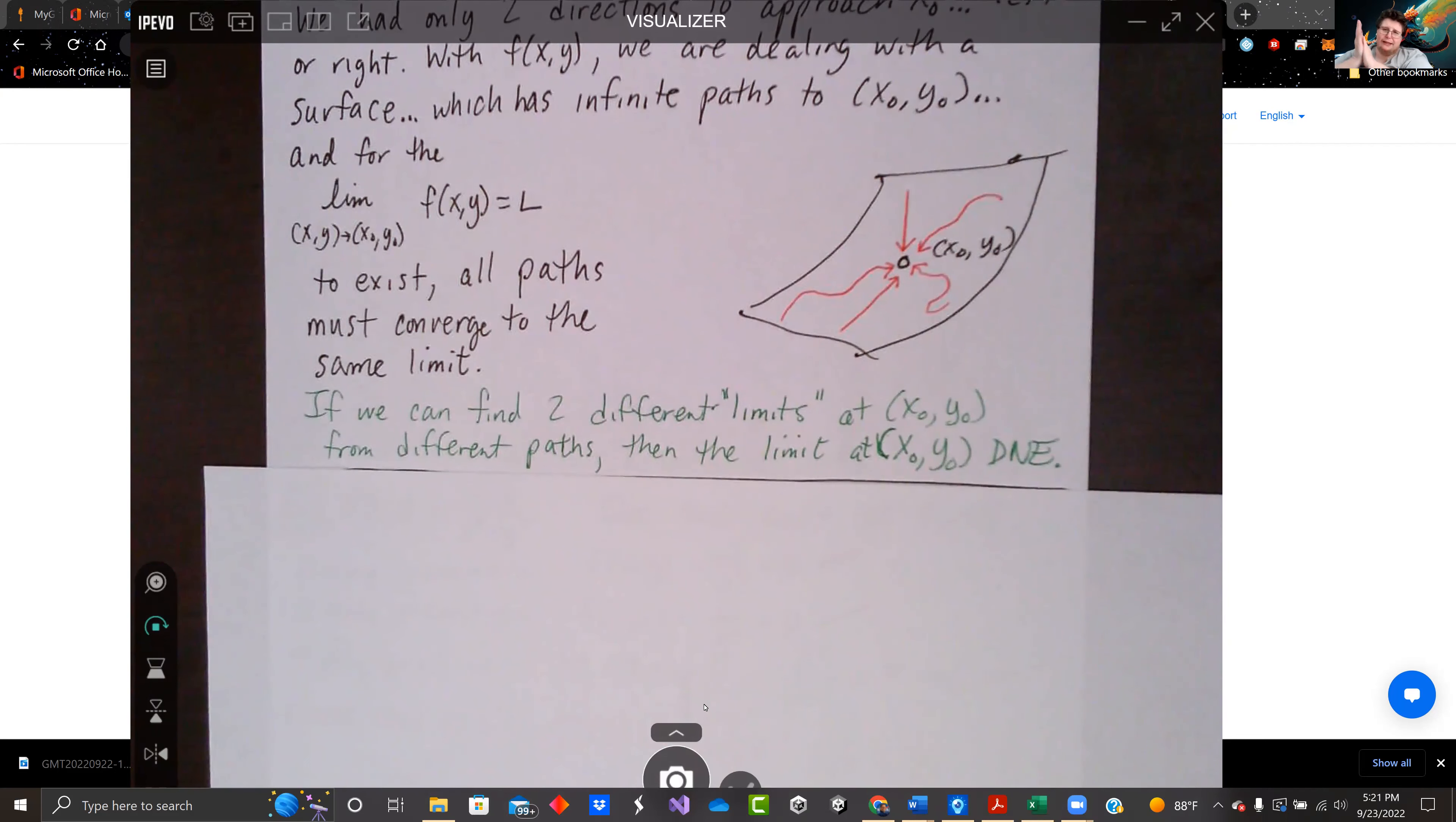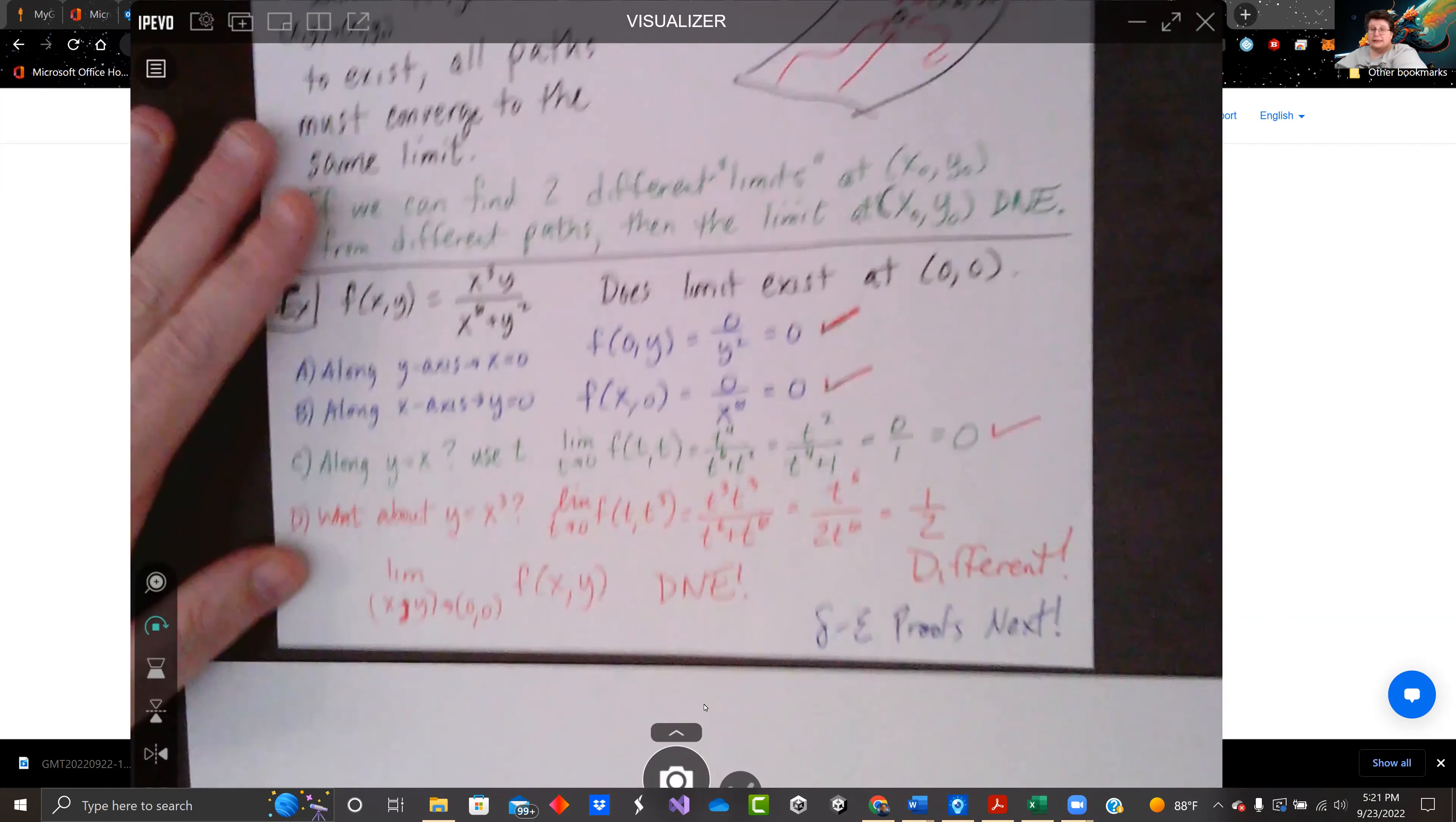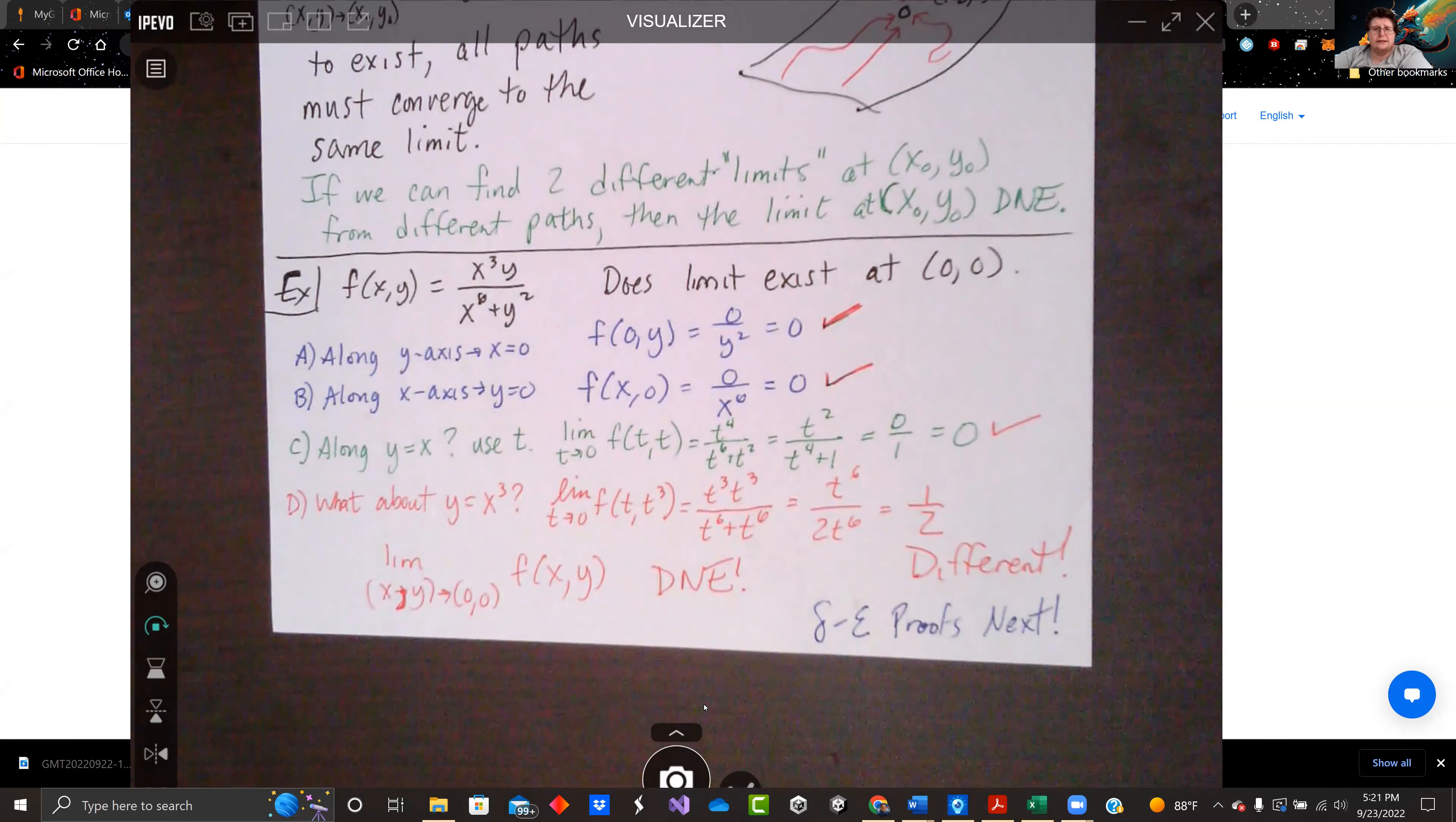So if we can find two different limits at (x0,y0) from taking different paths, then the limit doesn't exist. So we'll take a look at f(xy) = x³y/(x⁶+y²). Does this limit exist at (0,0)?